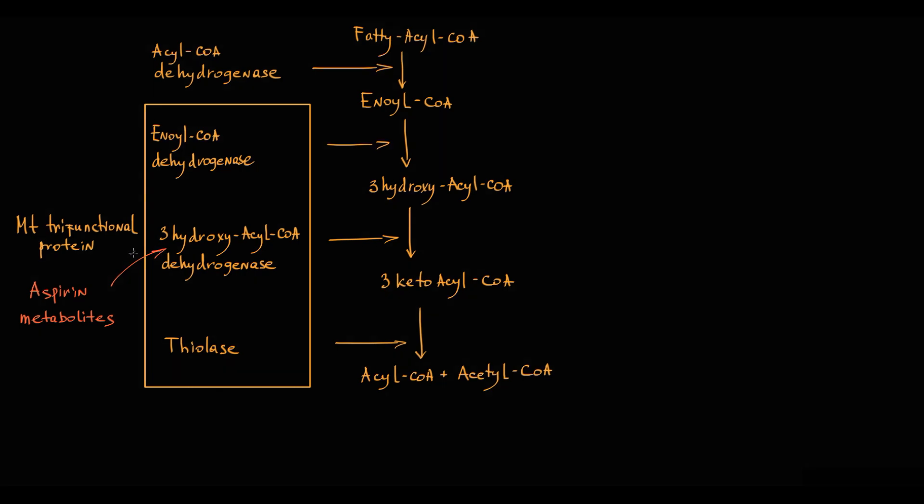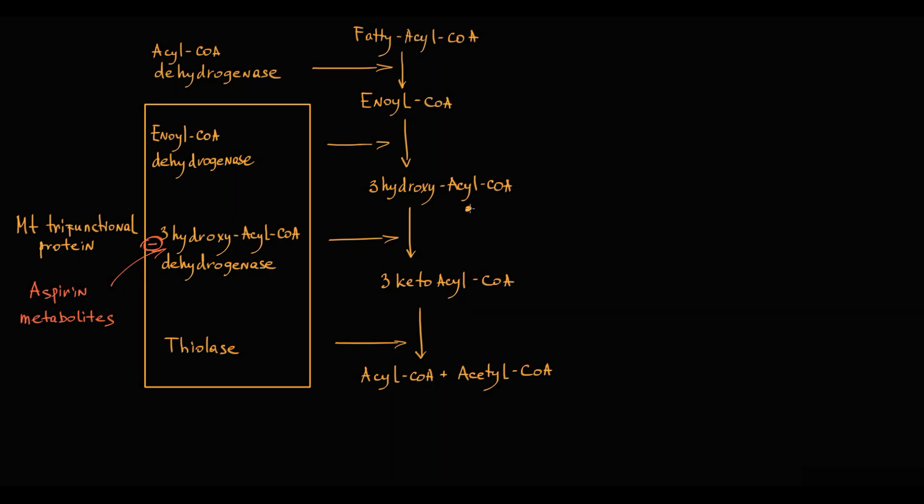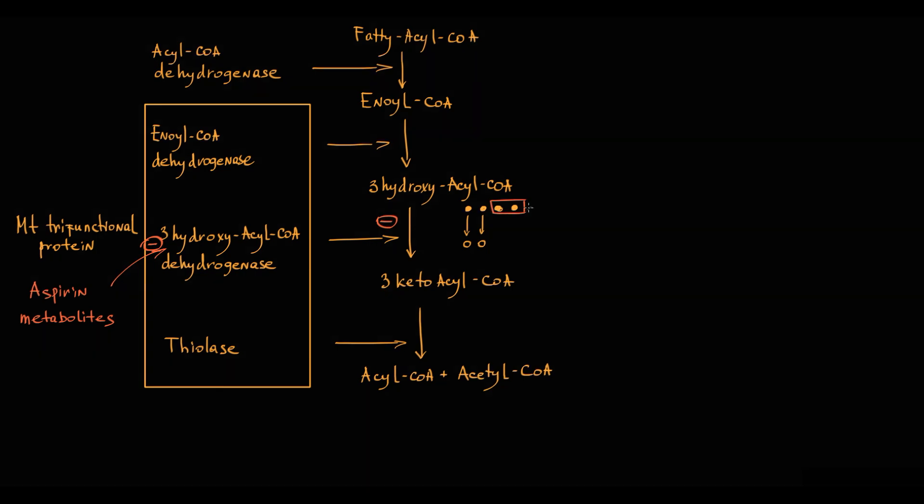Aspirin metabolites have similar structural features with normal substrates of 3-hydroxy acyl-CoA dehydrogenase. They are competitive inhibitors of this enzyme, so instead of degrading all fatty acids, some remain in tissues.